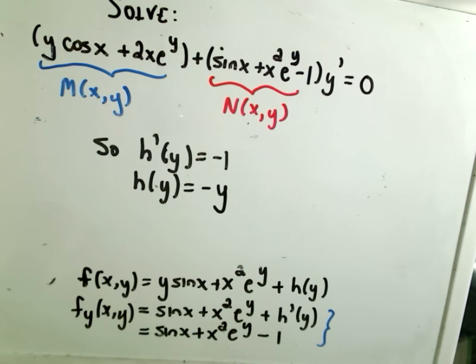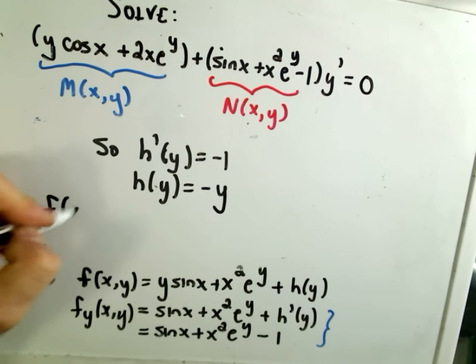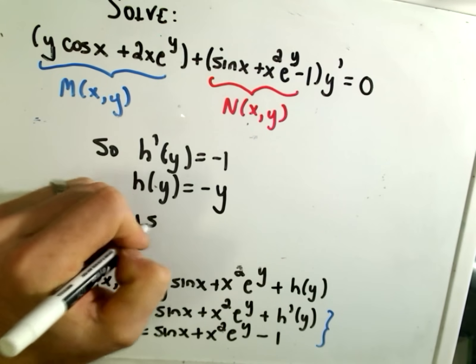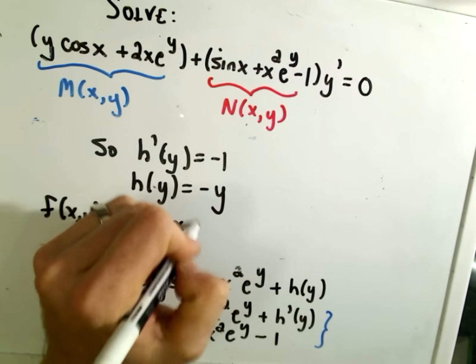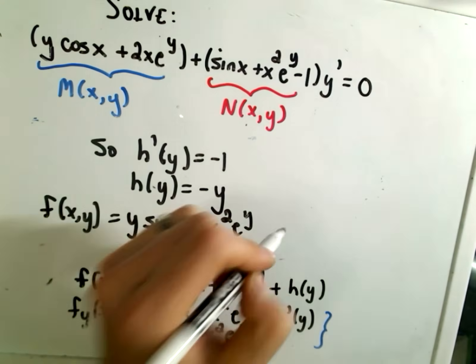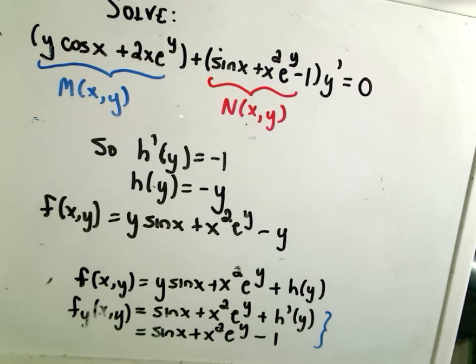Okay, so that means we can now plug that in to our f of x, y. So it says our function f of x, y is y times sine x plus x squared e to the y plus h of y, which is negative y. Okay, and this is the function that we want.